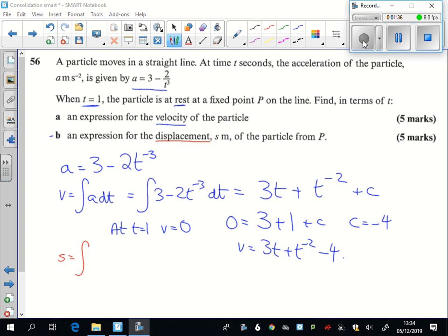So we're now integrating that thing that we just did there. And so this time what are we getting? We're getting 3t squared over 2, and then minus t to the power of minus 1.